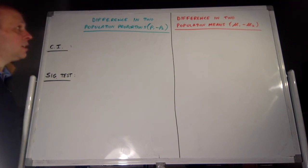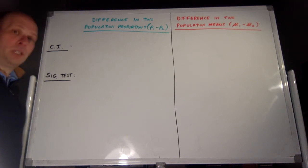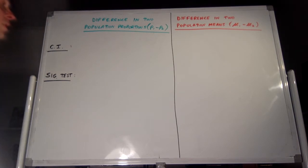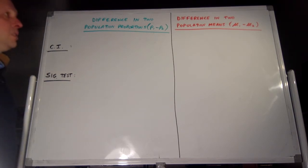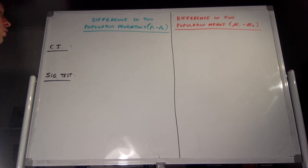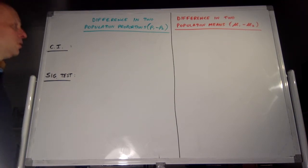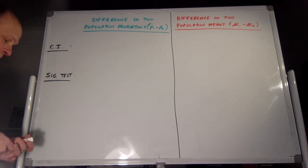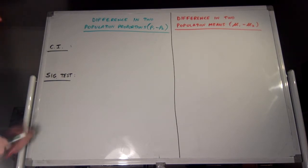Hey guys, welcome to our side-by-side comparison of what we've learned in Chapter 10, dealing with the difference in two proportions and also dealing with the difference in two means. So first, the confidence interval for the difference in two population proportions, p1 minus p2.